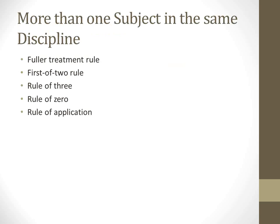To briefly summarize: if you're dealing with more than one subject in the same discipline, these are the five rules that apply - the Fuller Treatment Rule, First of Two Rule, Rule of Three, Rule of Zero, and Rule of Application. We'll start talking next week about more than one subject in a different discipline. These rules might come into play in the assignment for this week.